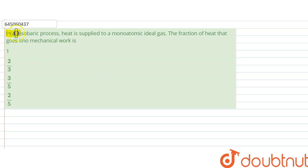The question says in an isobaric process, heat is supplied to a monoatomic ideal gas. The fraction of heat that goes into mechanical work is what? So let us say the heat supplied is q.